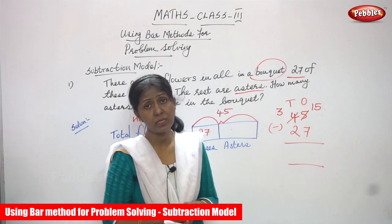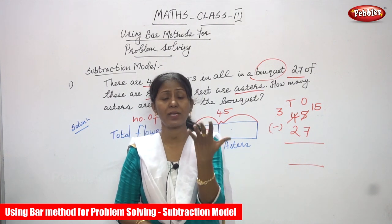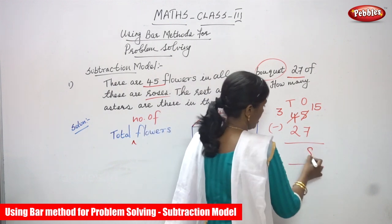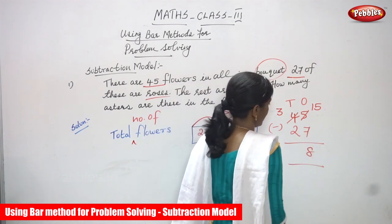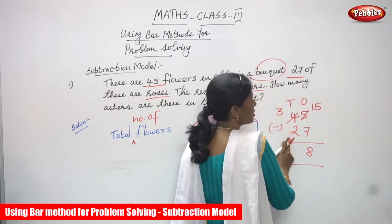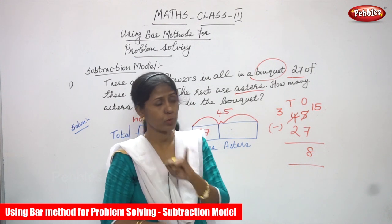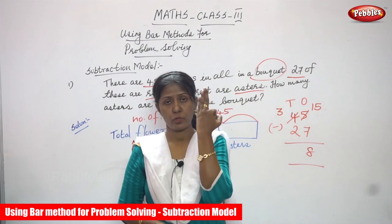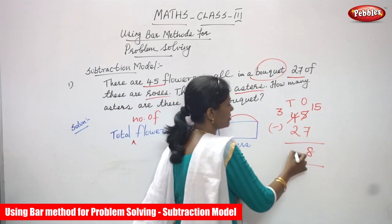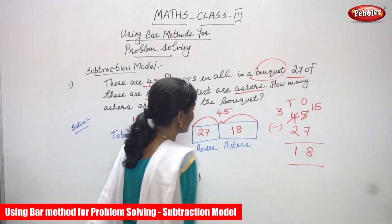You do the backward counting after 7: 8, 9, 10, 11, 12, 13, 14, 15 — that means the answer is 8. The ones place answer is 8. Now for the tens place: 3 minus 2. You show three fingers and fold two, so the remaining is 1. The answer is 1, giving us 18 asters — that is the number of asters, 18.